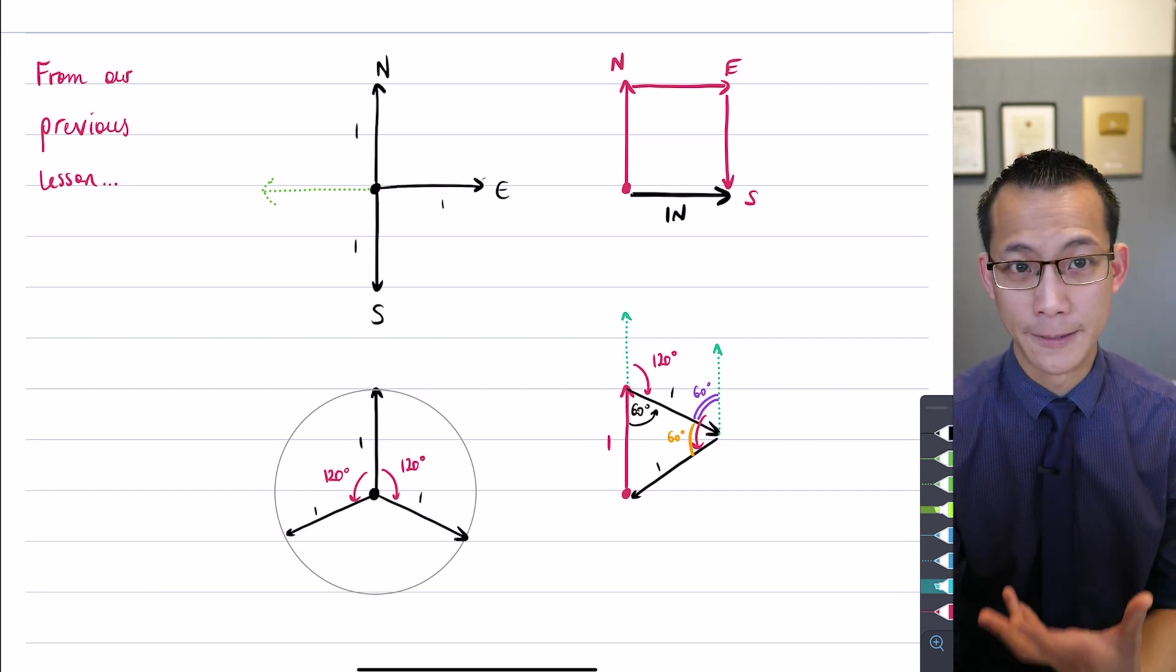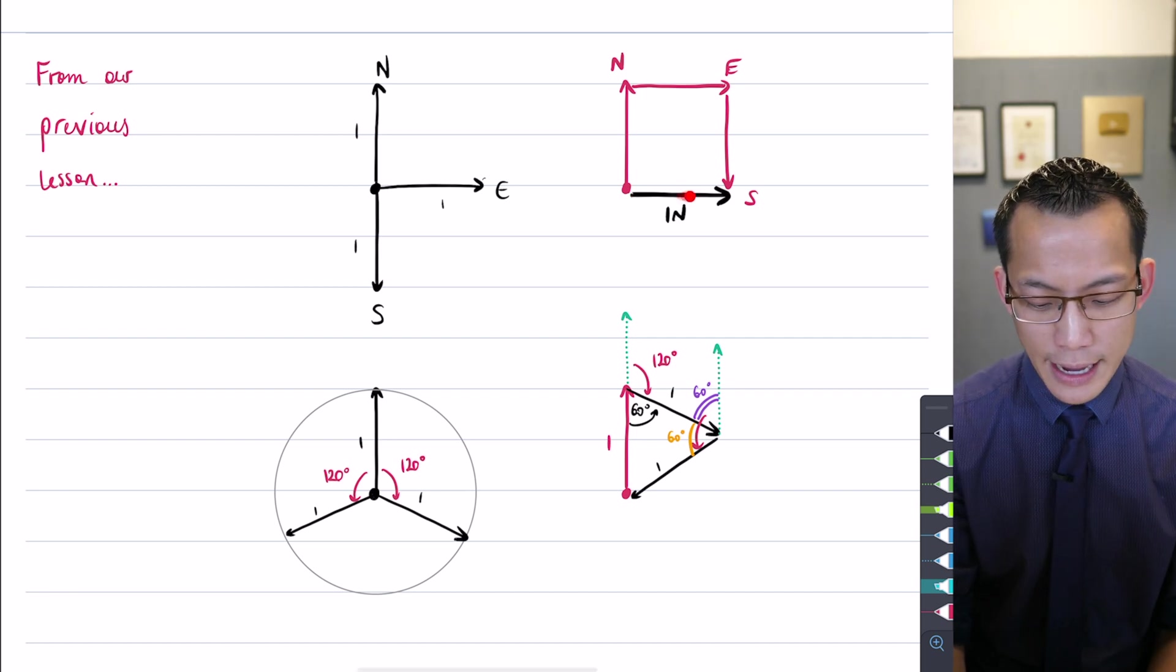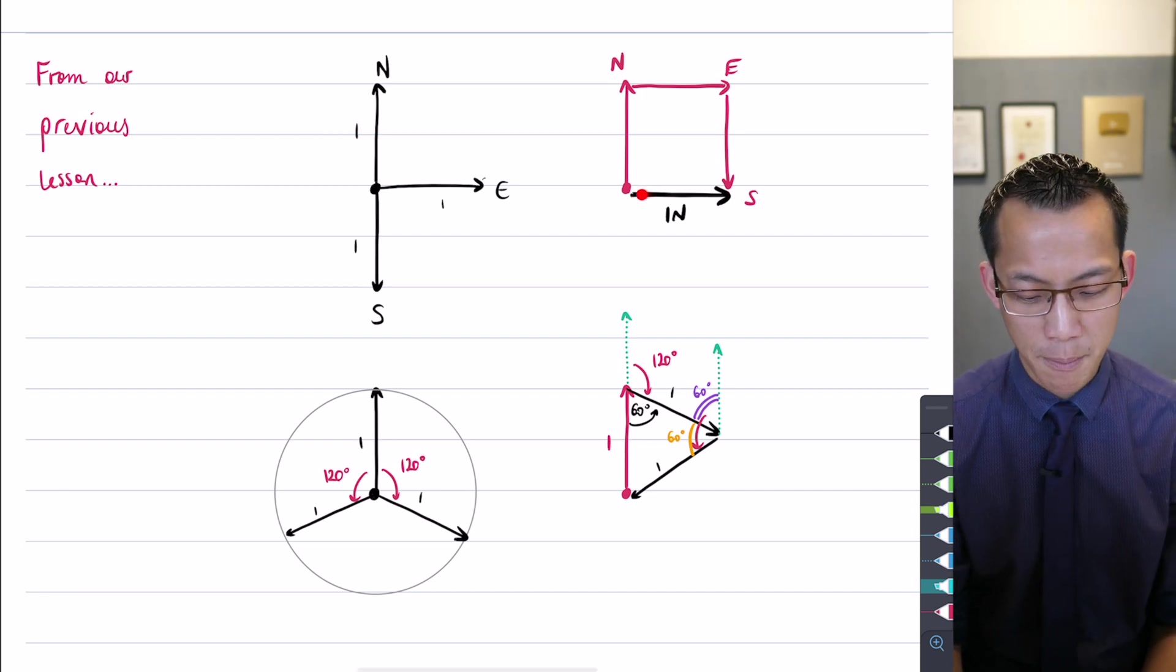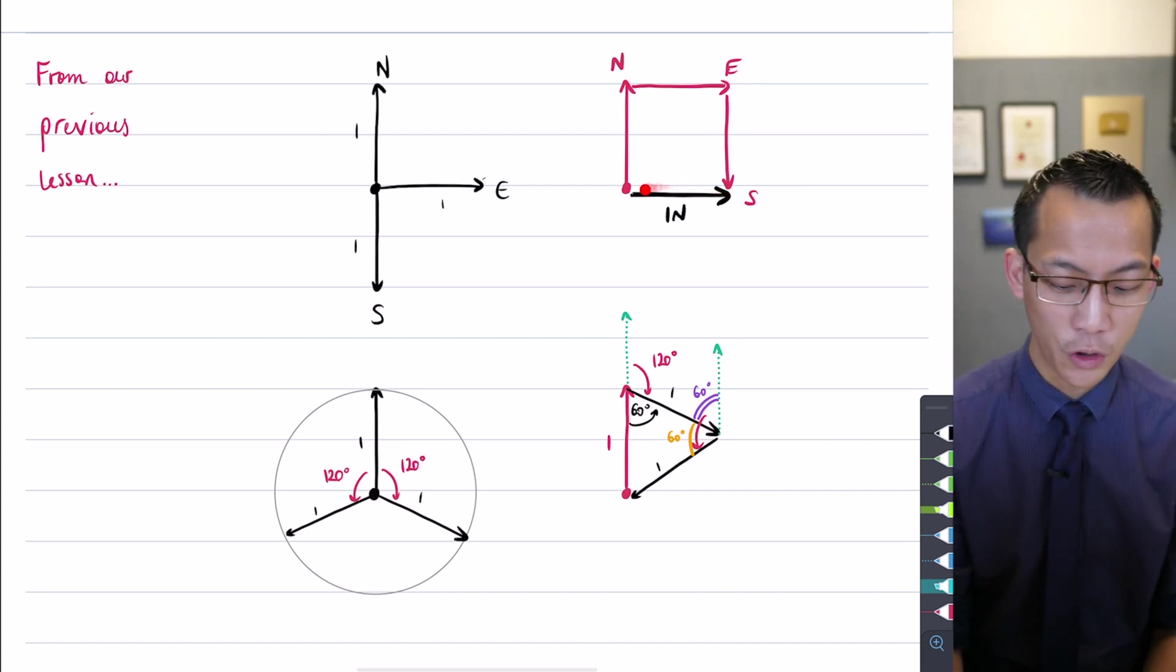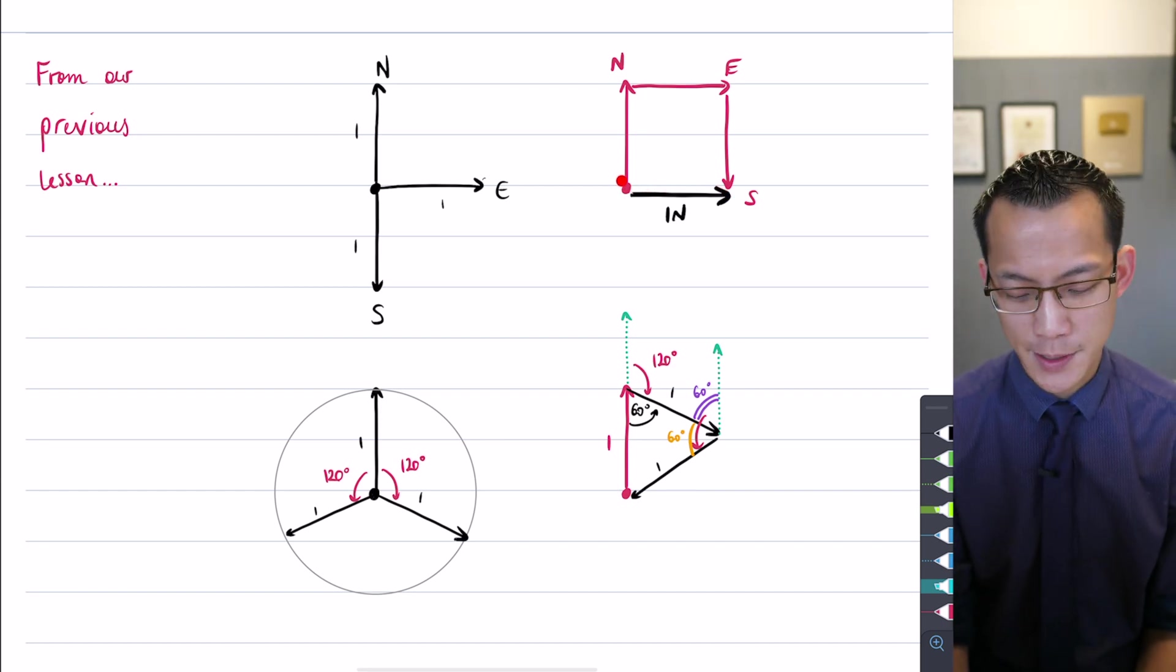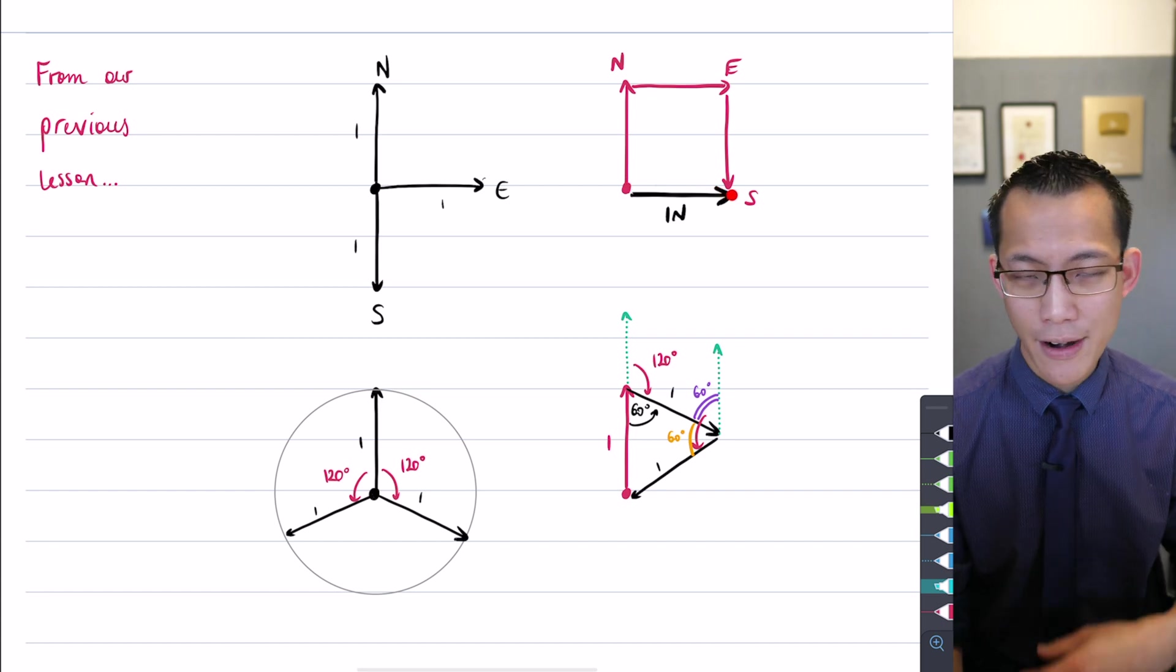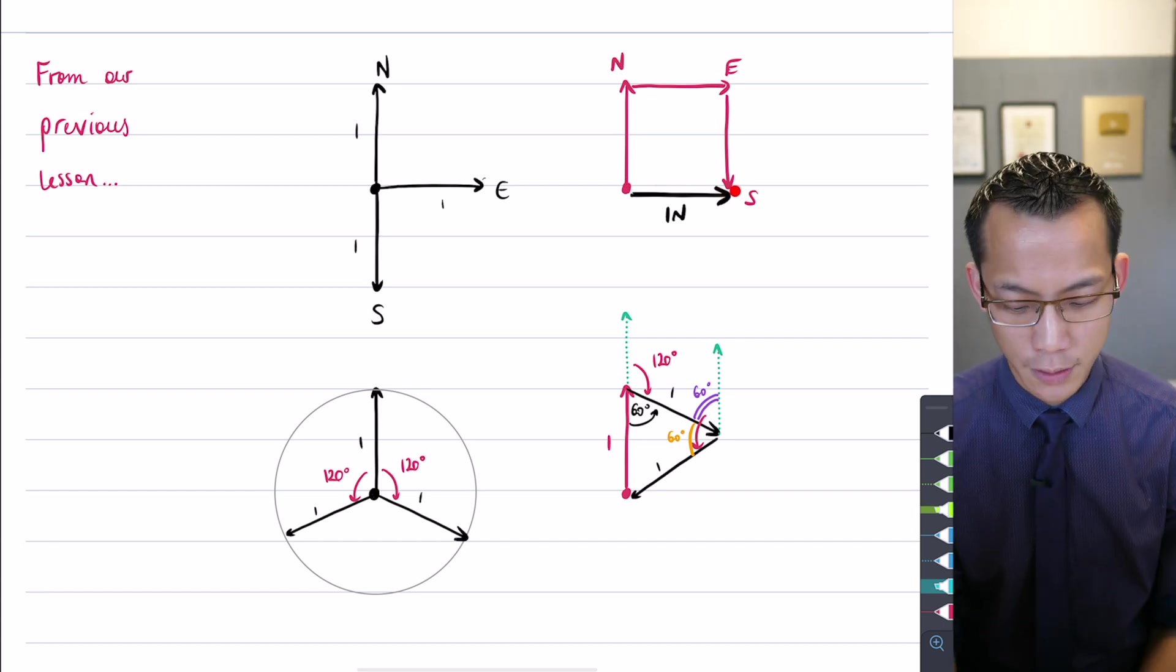Because we do not end back where we started. If we pictured these vectors as representing displacements, we don't come back to our origin, and so the difference between where we started and where our displacement vectors take us, that's the result of all of our forces.